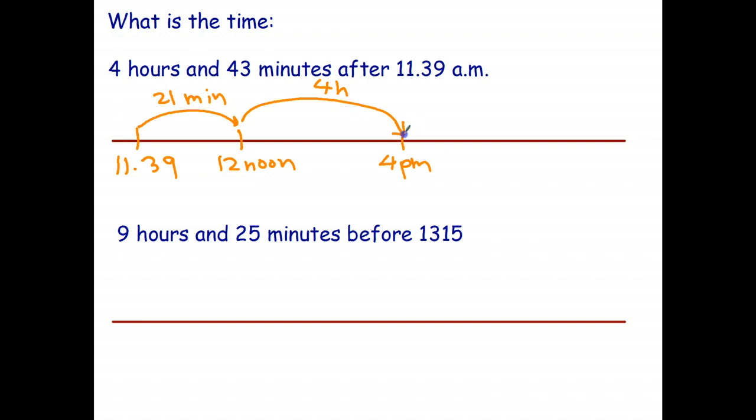Now, how many minutes do I have left? Well, I've already used up 21 out of my 43. That means I've got 43 take 21 is 22 minutes. So, I've got an extra 22 minutes after 4 o'clock. Quick check, 21 plus 22 is 43. And it looks like the answer is 4.22 p.m.